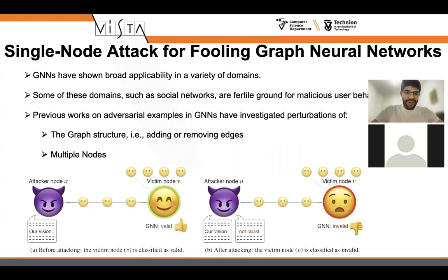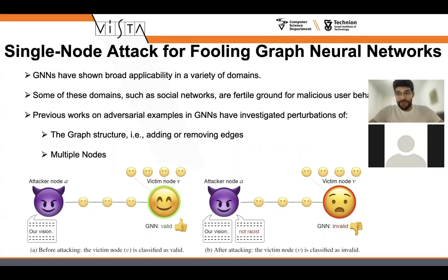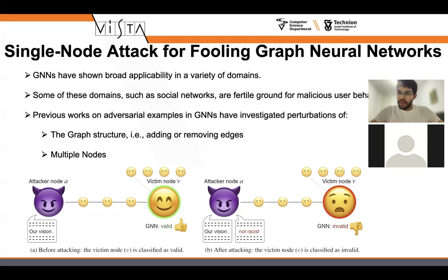So why is it interesting? GNNs have shown broad applicability in a variety of domains, such as social networks, which is a very fertile ground for malicious behavior. Social networks are overall very important, and their uses and applications are very influential to our daily basis. Some users could act in a malicious behavior, and that could influence our GNN in ways that we would not like.